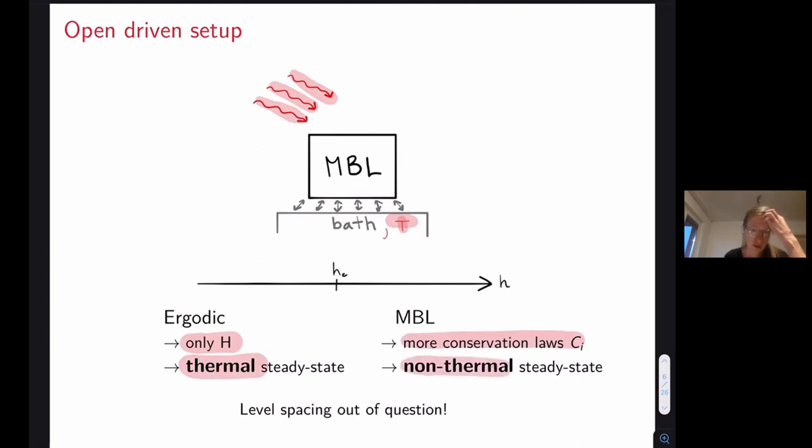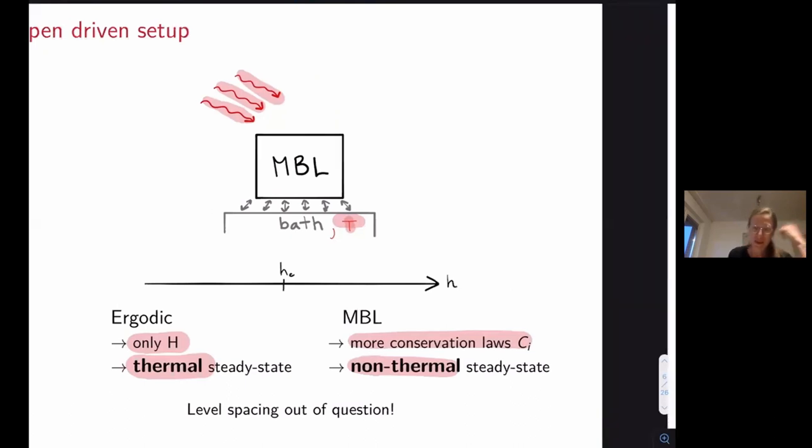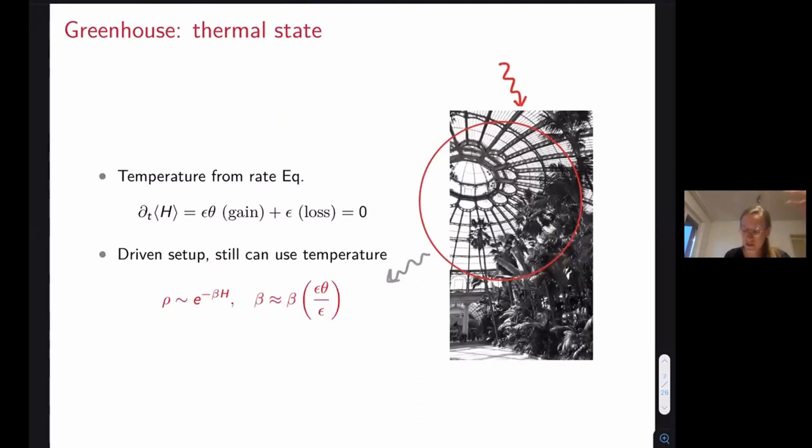Where's the intuition for these two types of states coming from? Well, it can be quite nicely illustrated with this everyday example of the greenhouse, because greenhouse is also a classical example with approximately conserved energy. We all know that even though it's an open driven system, it's described with a temperature. So we expect that also if we consider a quantum system, it will be approximately described with a Gibbs ensemble.